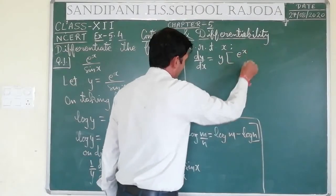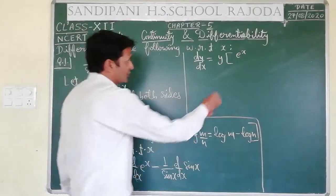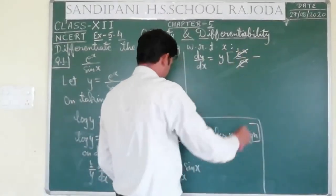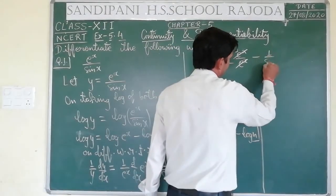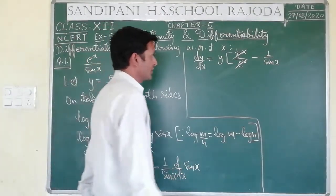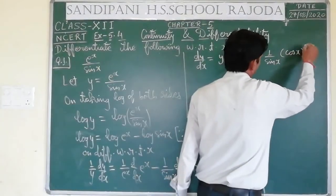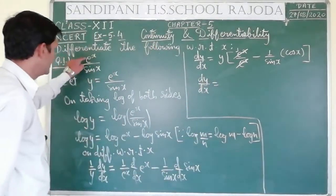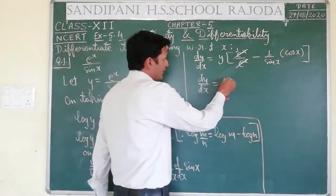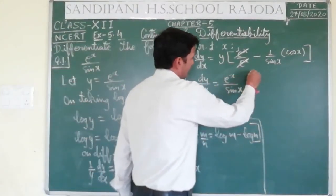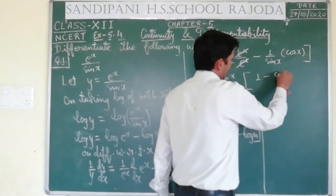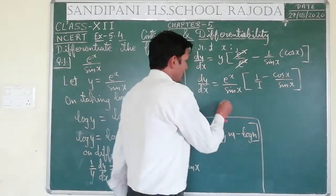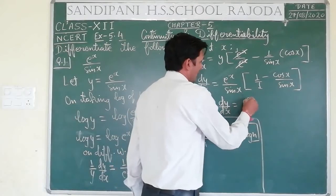So (1/y)·dy/dx = e^x/e^x - cos x/sin x = 1 - cos x/sin x. Then dy/dx = y · (1 - cos x/sin x). y की value e^x/sin x थी, so dy/dx = (e^x/sin x) · (1 - cos x/sin x).